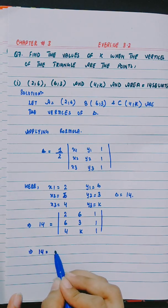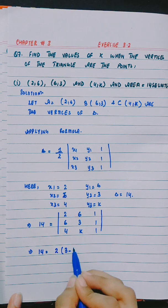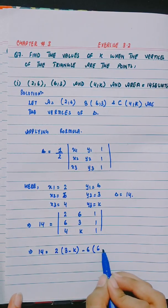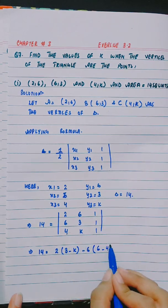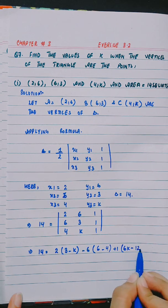Evaluating the determinant: 2 times (3 minus k) minus 6 times (6 minus 4) plus 1 times (6k minus 12).